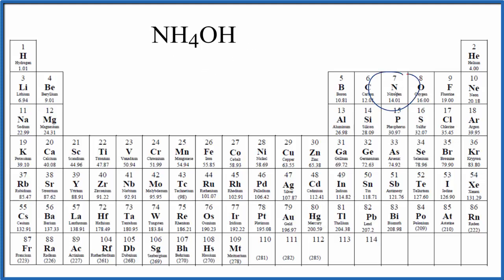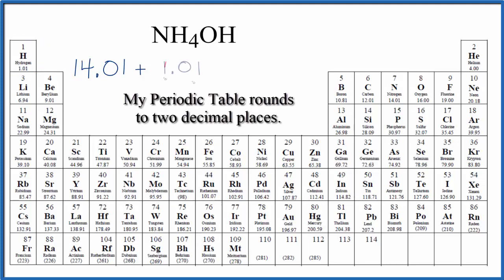So nitrogen right here, 14.01, and the units are grams per mole, but I'm not going to write that each time. Let's do that at the end. Plus we have hydrogen, that's 1.01 grams per mole, we have 4 of them,